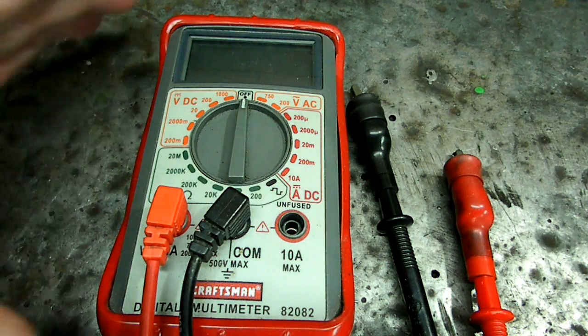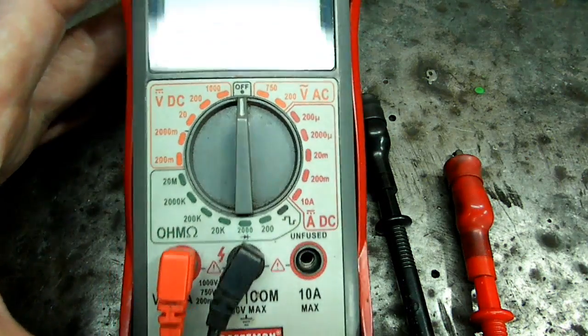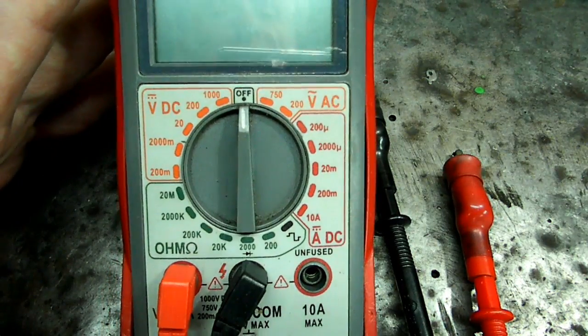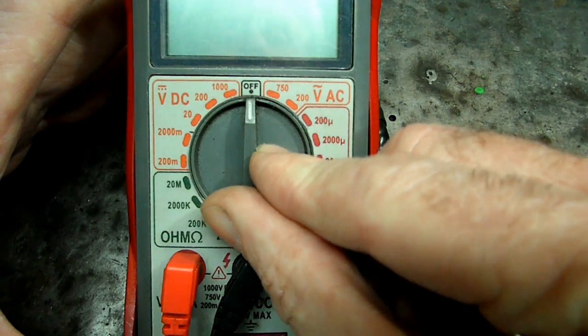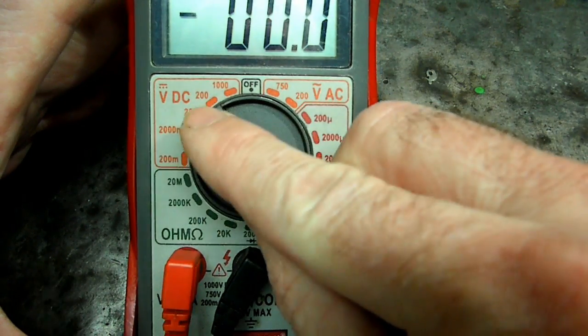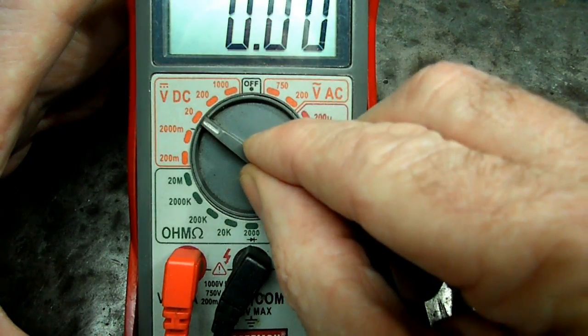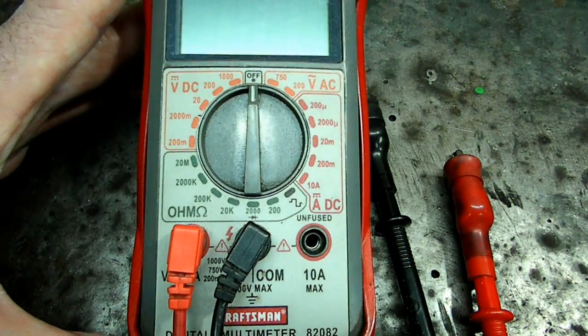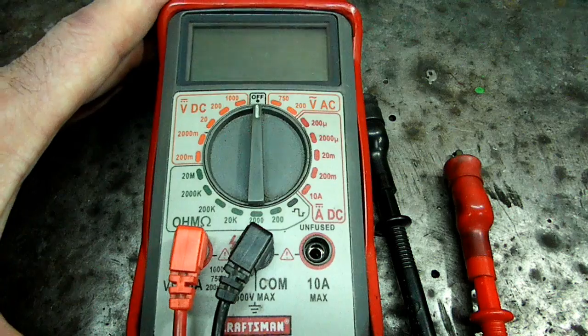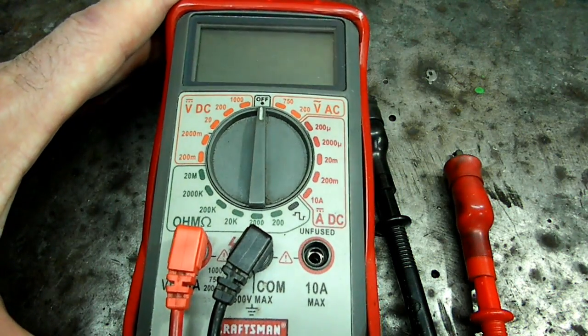Now what I got here is a manual ranging meter, as opposed to an auto-ranging meter. This one you have to select what range it is on the meter. A little bit more difficult to use, but nonetheless it's pretty easy once you get used to it.